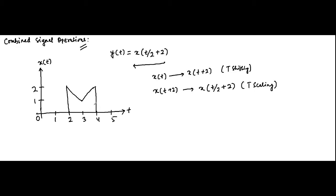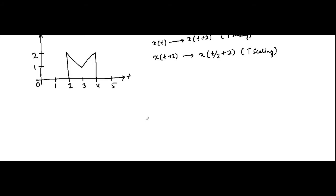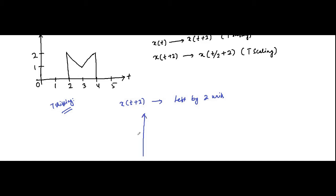This is the signal on which we have to perform these operations. First we'll do the time shifting. For x(t+2), the plus sign indicates that the shifting will happen to the left hand side by two units. This is the original signal x(t), and here is what will be the time shifted signal.